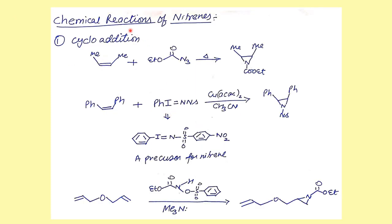Now let's discuss chemical reactions of nitrenes. When nitrenes react with olefins (alkenes), they undergo addition reactions. For example, when an acyl azide is heated to generate a nitrene and olefin is added, the nitrene adds across the double bond in a stereospecific manner to give an aziridine compound.